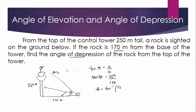So tangent theta equals 250 over 170. To find the angle, we take the inverse tangent: theta equals tangent inverse of 250 divided by 170. On your calculator, press shift then tangent to get the inverse tangent function, then enter 250 divided by 170. The value of theta is approximately 55.78 degrees in decimal, or 55 degrees and 47 minutes to the nearest minute.